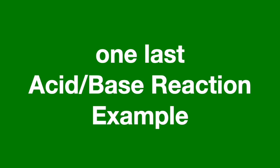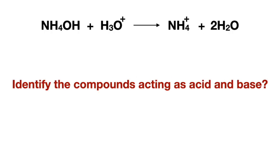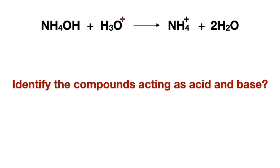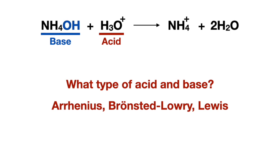In our last example, one way to identify the acid and base is to notice that the left reactant has a hydroxide that it donates on the product side, making it the base and the other reactant the acid. Or you can notice that the reactant on the right has a positive charge, making it the acid and the other reactant the base. The base has a hydroxide, which means it's not Lewis or Bronsted-Lowry, making it an Arrhenius base and therefore an Arrhenius acid.